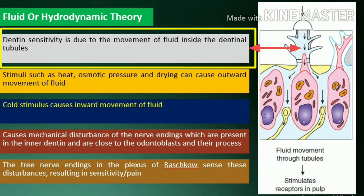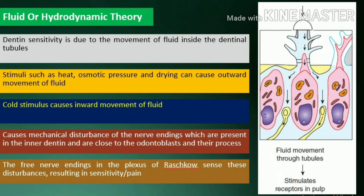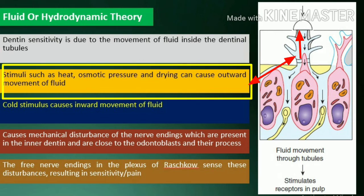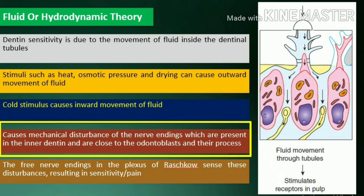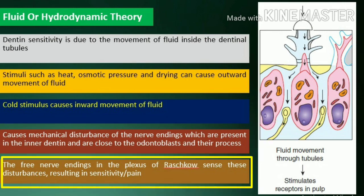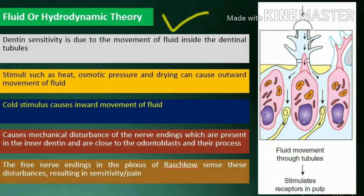Fluid or hydrodynamic theory: dentin sensitivity is due to the movement of fluid inside the dentinal tubules. Various stimuli such as heat, osmotic pressure, and drying can cause outward movement of fluid, whereas cold stimulus causes inward movement of fluid. Movement in either direction causes mechanical disturbance of the nerve endings present in the inner dentin, close to the odontoblasts and their processes. The free nerve endings in the plexus of Raschkow transmit these disturbances, resulting in sensitivity or pain. This widely accepted theory proposes that nerve endings act as mechanoreceptors.